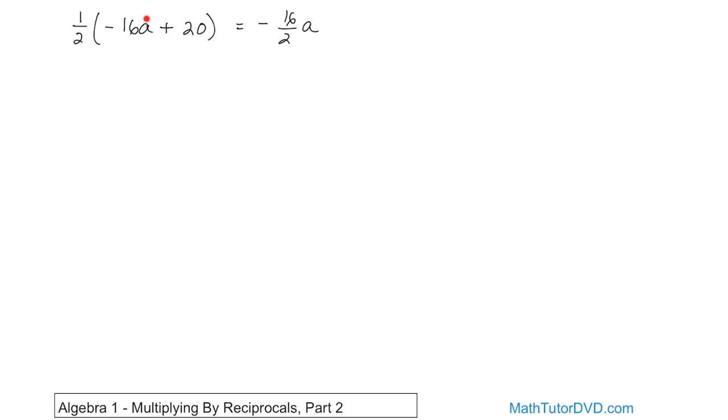The reason it's written that way is because 16 is really 16 over 1. Multiply the top numbers, you get that. Multiply 1 times 2 and you get that. The negative sign comes because of negative times positive. The a just comes along for the ride.